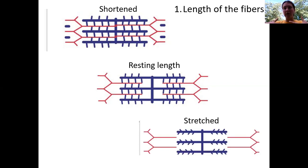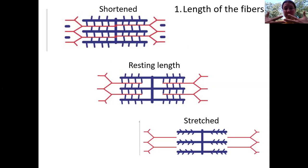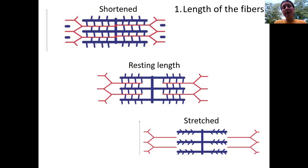On the other hand, if we stretch out those sarcomeres, there is very little to no zone of overlap, which means that even if calcium causes troponin to remove tropomyosin, those myosin heads aren't going to be able to actually bind to the active sites on actin. Therefore they can't generate tension or start those filaments sliding over one another. The length of the fiber at the beginning of contraction is really important in determining how strong that muscle contraction can be.